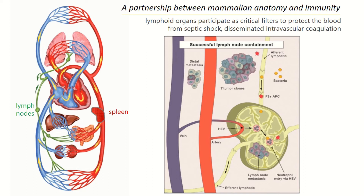Additionally, some immune cells — here shown as tissue factor or factor 3 positive antigen presenting cells — can be captured by the lymph node and not actually leave it. Factor 3 is known to initiate coagulation, so the fact that the lymph node captures these is very important. Another feature of this cartoon shows tumor cells. If you imagine a tumor growing in a tissue, we now appreciate that metastases to lymph nodes do not always further disseminate — the lymph node stops them. The distal metastases in the same patients will actually be from different clones. Overall, the body is designed with a lymphatic and lymph node partnership to prevent dissemination of harmful signals that would be detrimental if they reach the blood.